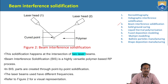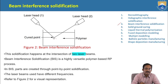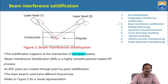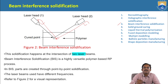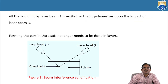BIS stands for Beam Interference Solidification. The laser beams used have different frequencies. All the liquid hit by laser beam 1 is excited so that it polymerizes upon the impact of laser beam 2.